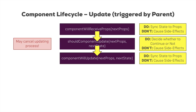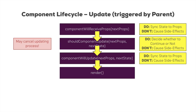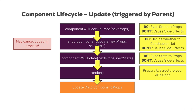Once this has executed successfully, you reach the render method again, rendering the JSX and telling React what will actually be the result of your updated component. You should prepare and structure your JSX code there. After that, React will go ahead and update all child component props, which may trigger updates for the child components, just as it did trigger an update for this component.